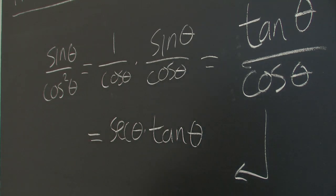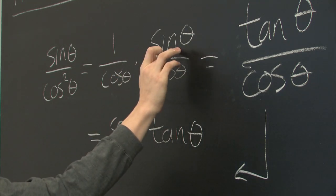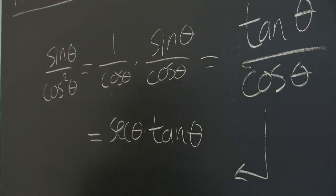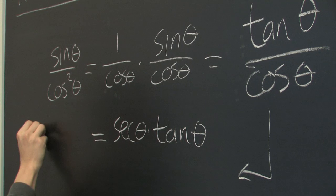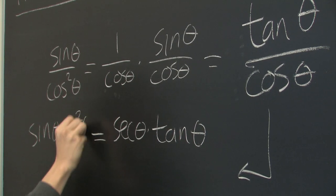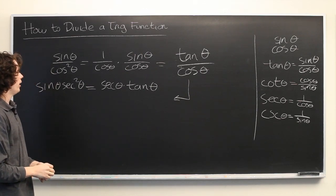We could rewrite it a different way if we didn't want to use tangent theta at all. This sine becomes secant, and this becomes secant. So, this becomes sine theta secant squared theta.